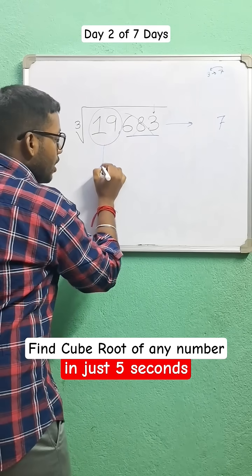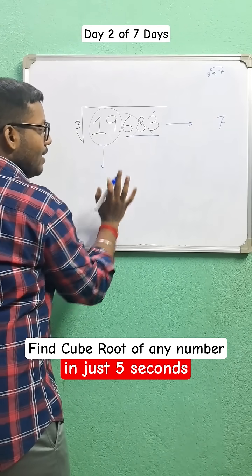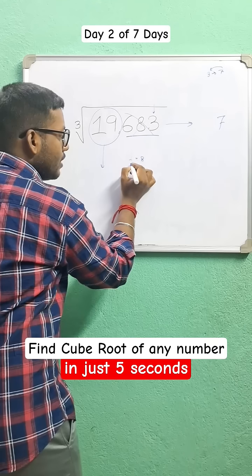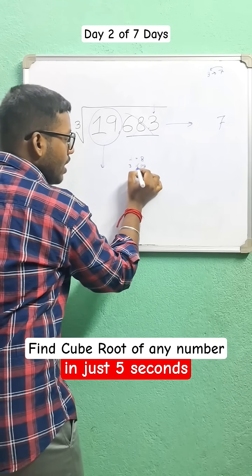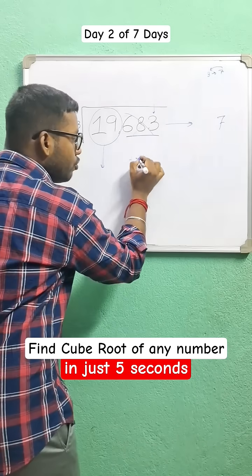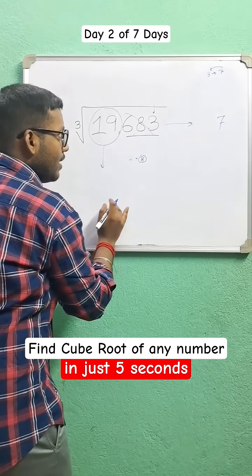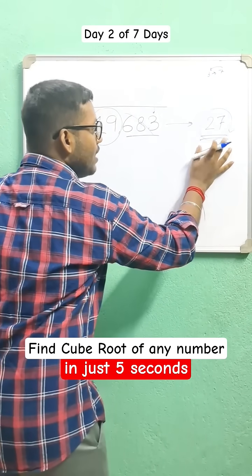Now we have to consider 19. We need to find a number whose cube is less than 19. So the cube of 2 is 8, cube of 3 is 27. So 27 is more than 19. Cube of 2 is 8, which is less than 19. So we have to write 2 here. So the final answer is 27.